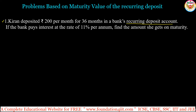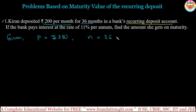First of all, we should take the given data. Kiran deposited 200 per month, so P equals rupees 200. For 36 months, N equals number of months, so N equals 36. And rate of interest is 11%, so R equals 11%. We have P, N, and R.